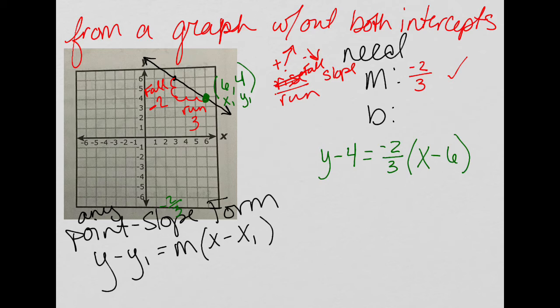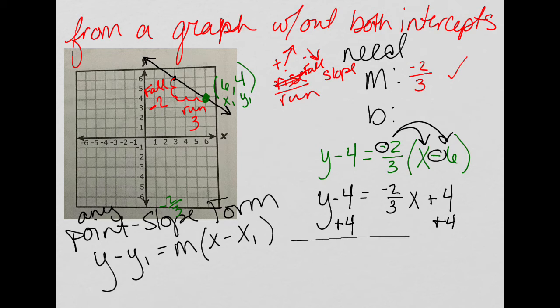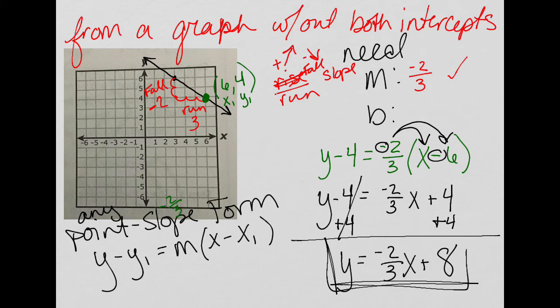Now I want to convert this to slope-intercept. To do so, you would get rid of the parentheses by distributing the slope. Distributing is multiplication. So that would be negative 2 thirds x plus, 2 thirds times 6: 6 divided by 3 would be 2 times 2 is 4. It is positive because the negative times the negative is positive. So then my next step would be to move the negative 4 over to get y by itself, and I'm going to add it to the other 4 because those are like terms. So I end up with y equals negative 2 thirds x plus 8, and that would be my slope-intercept form.